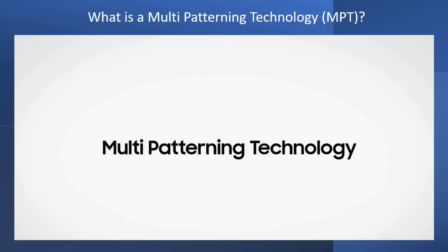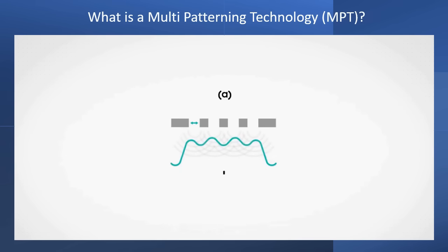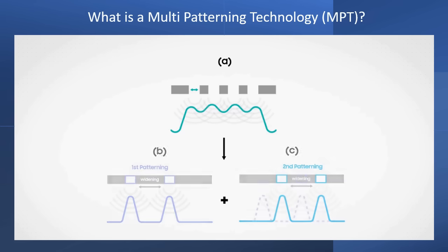Multi-patterning technology is the use of multiple masks and process steps to create a single pattern. Patterning carried out using four slits on a single mask results in a corrupted pattern since the slits are too close to each other. With MPT, two masks are used to create the pattern as shown in figures B and C. The four slits are divided into pairs with wider spacing, avoiding light interference and distortion to successfully create a clean pattern.